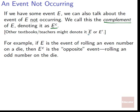For example, if E is the event of rolling an even number on a die, then E^c is the opposite event — rolling an odd number. If you roll an odd number on the die, you are in the complement of the event.